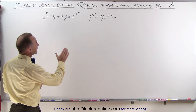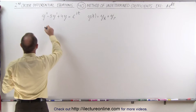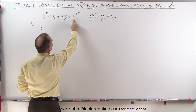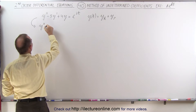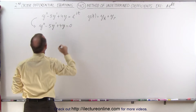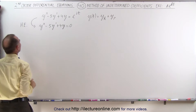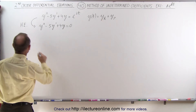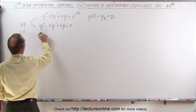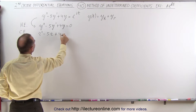First, we find the homogeneous part by taking the equation and setting it equal to zero. So we have y double prime minus 5y prime plus 4y equals zero. That is the homogeneous equation. Now we find the characteristic equation: r squared minus 5r plus 4 equals zero.